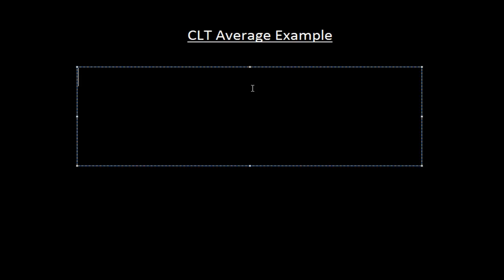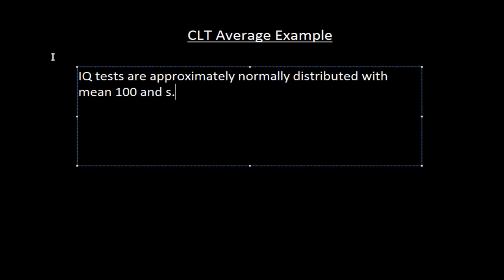And it's well known, and the scores are scaled this way, so that IQ tests are approximately normally distributed with a mean of 15, or excuse me, a mean of 100 and a standard deviation of 15. Suppose that 60 Hispanic students are chosen at random to take an IQ test.